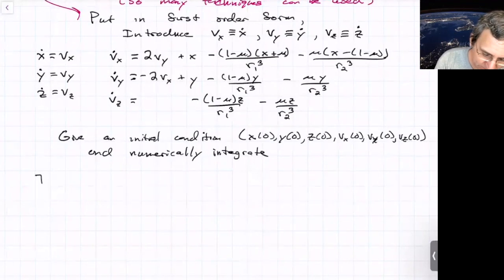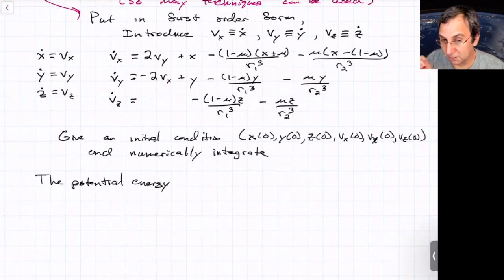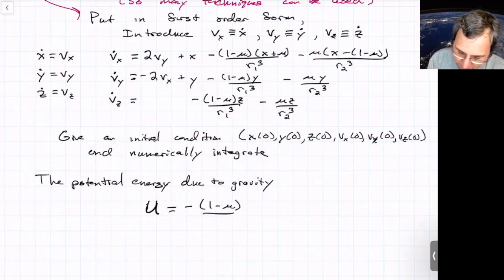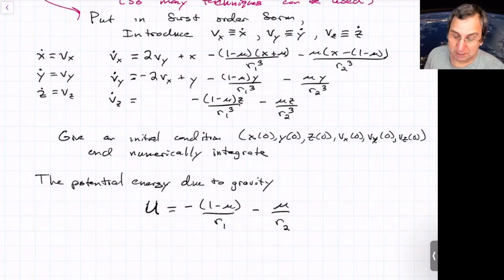The potential energy that the particle is experiencing due to gravity is actually pretty simple to write. This is a capital U. This is in the non-dimensional form. We have two 1 over r potentials. We've got the 1 over r related to M1, and then 1 over r related to M2. The non-dimensional masses are 1 minus mu and mu, respectively. So in some sense, that's all we would have to write to say this is the potential energy.